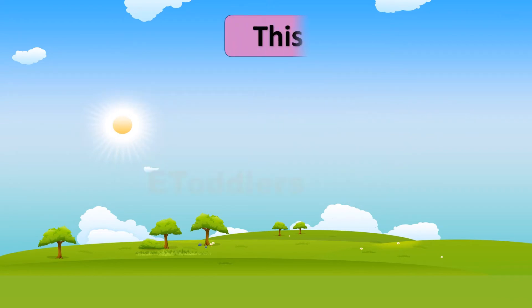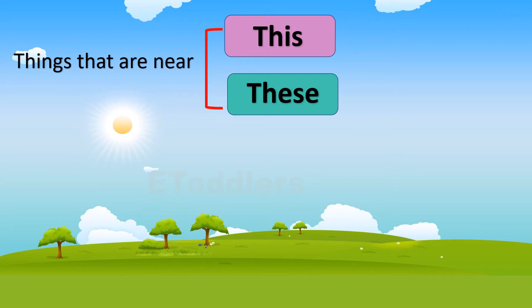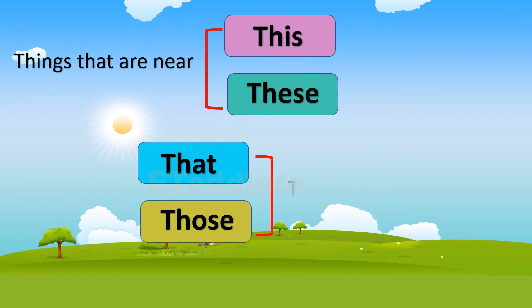This and these are referred to things that are near, whereas that and those are referred to things that are far away.